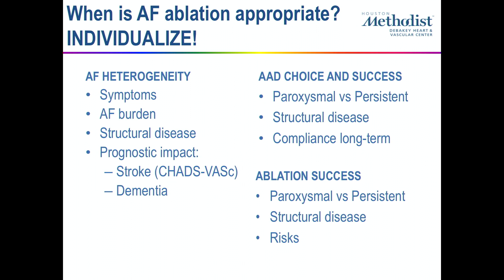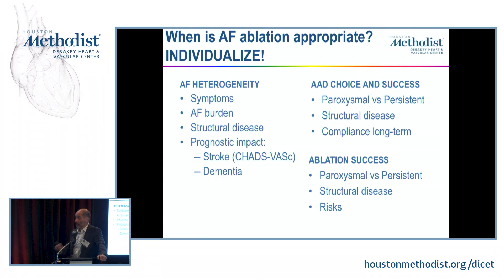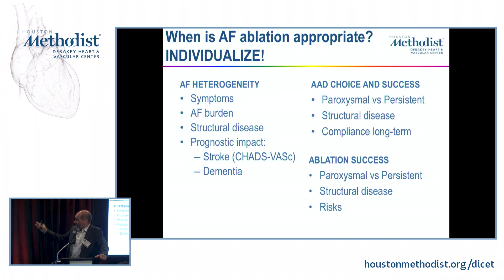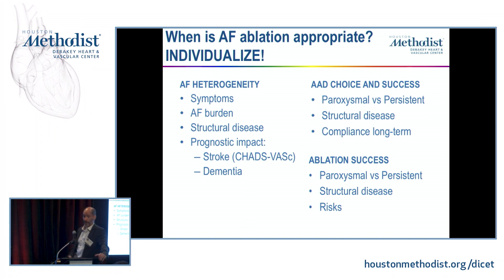When is AFib ablation appropriate? Like every medical condition, you need to individualize. AFib is heterogeneous in symptoms, AFib burden, structural heart disease, and prognostic impact. We use the CHADS-VASc scoring system to assess stroke risk, but not everybody has equal implications from AFib. If a patient has five minutes of symptoms once every six months, the treatment may be worse than the disease at that stage. There's also heterogeneity in antiarrhythmic drug choice depending on structural disease and whether AFib is paroxysmal or persistent, and ablation success and risks vary across these different scenarios.